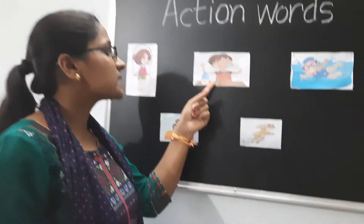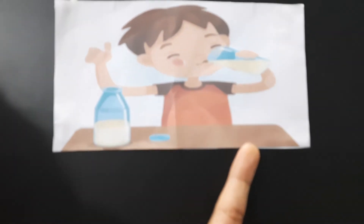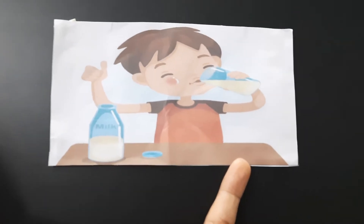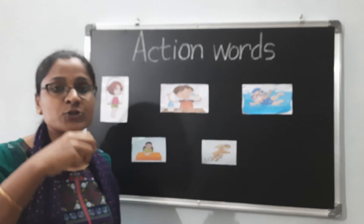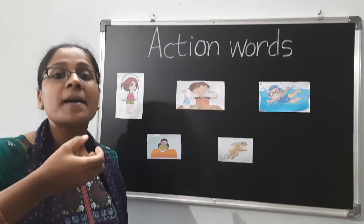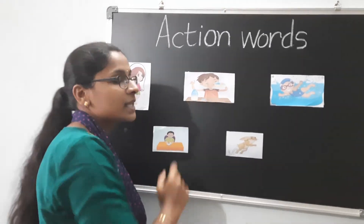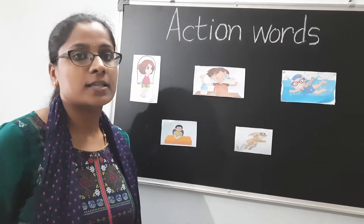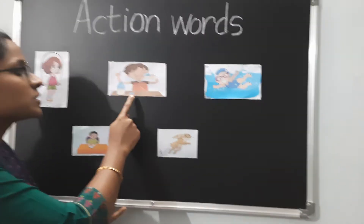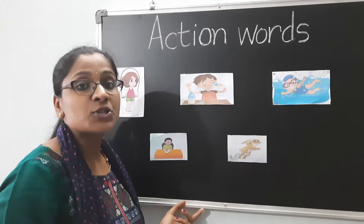What is the next picture we have here? Drinking. What is he doing? He is drinking milk. Drinking milk is good for health. So the action word here is drinking.